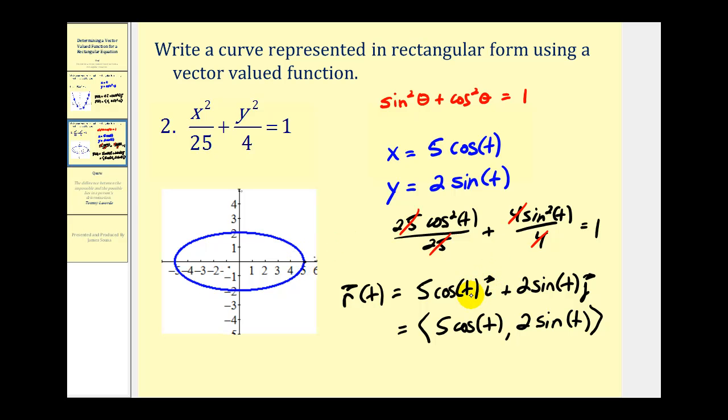At t = π/2, the x-component would be 0 and the y-component would be 2, placing us here. This means we're graphing this counter-clockwise, based on how we defined the vector-valued function.